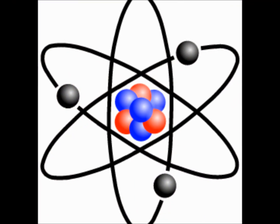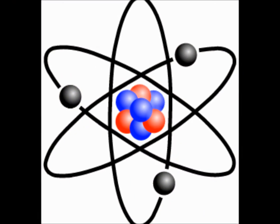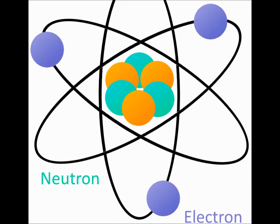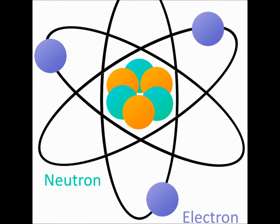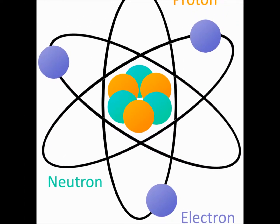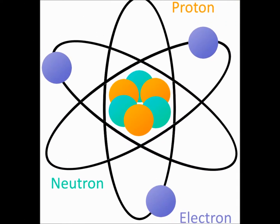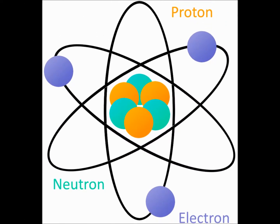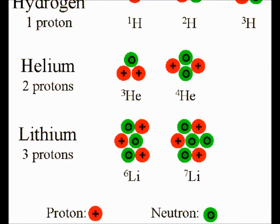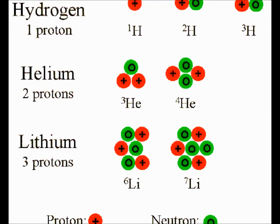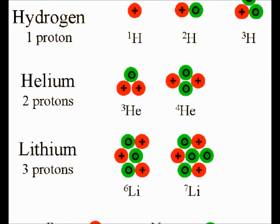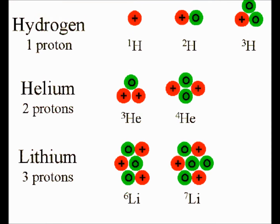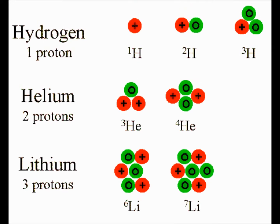An atom is the smallest unit of an element and it is what most matter is made up of. Every atom has a nucleus, and inside the nucleus there are protons, neutrons, and electrons. Atoms with different combinations of protons, neutrons, and electrons make every different element.